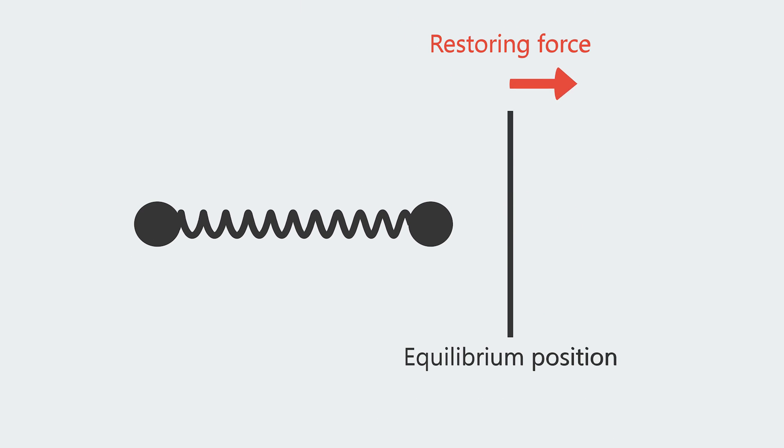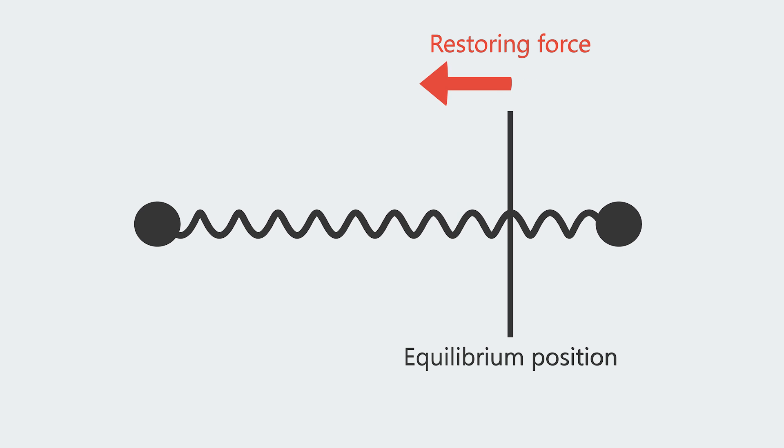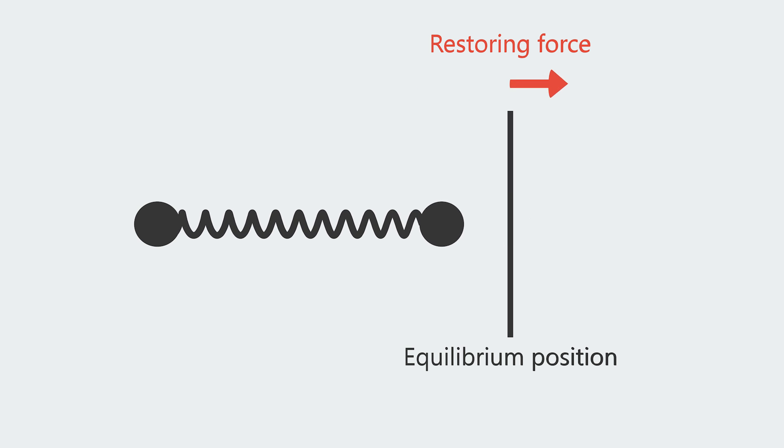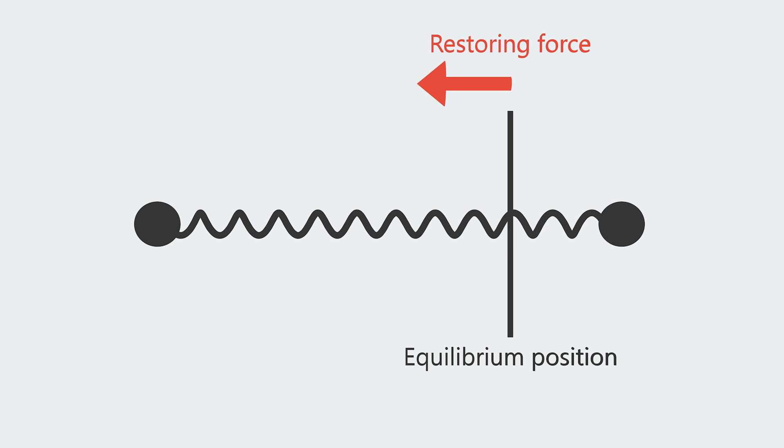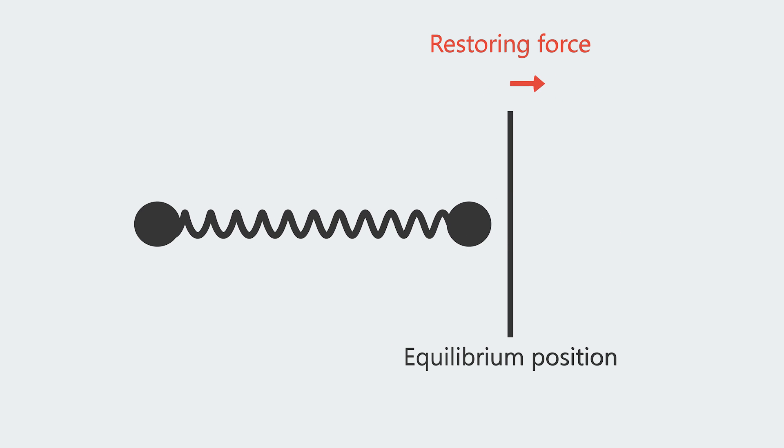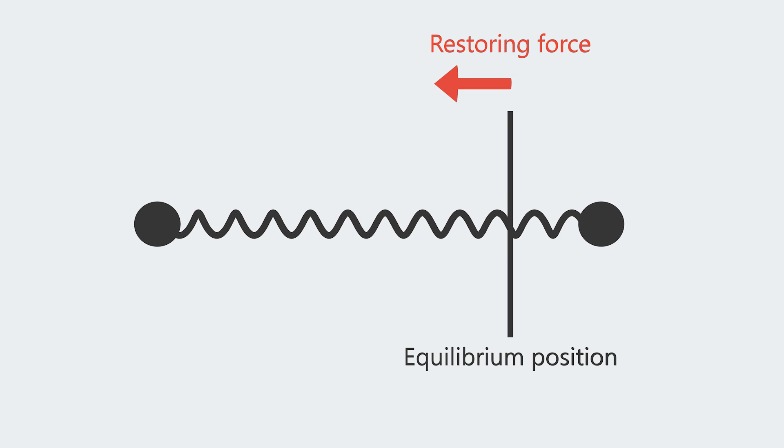The force of neighboring atoms in a solid can be thought of as a system of springs. When the atoms are farther apart, the atomic force pulls them together. When they are close, the force pushes them apart. Thus, we have an oscillating spring behaving system.